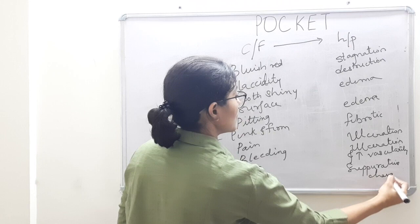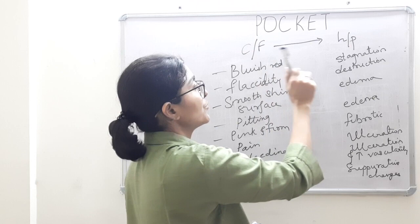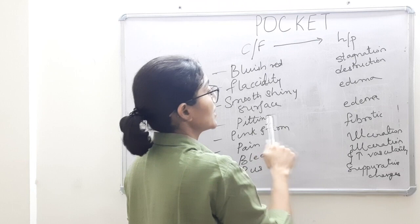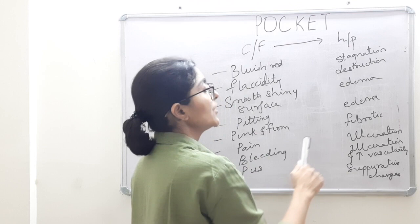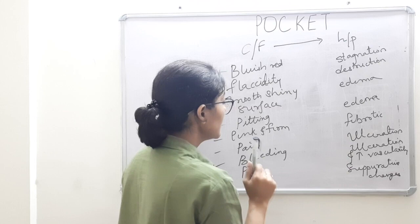We have correlated the clinical features of a pocket with the underlying histopathology: bluish-red discoloration is attributed to circulatory stagnation; flaccidity to destruction of gingival fibers; smooth shiny surface to edema and destruction; pitting on pressure to edema; pink and firm tissue less frequently due to fibrotic changes; pain due to ulceration; bleeding due to ulceration and increased vascularity; pus due to suppurative changes.